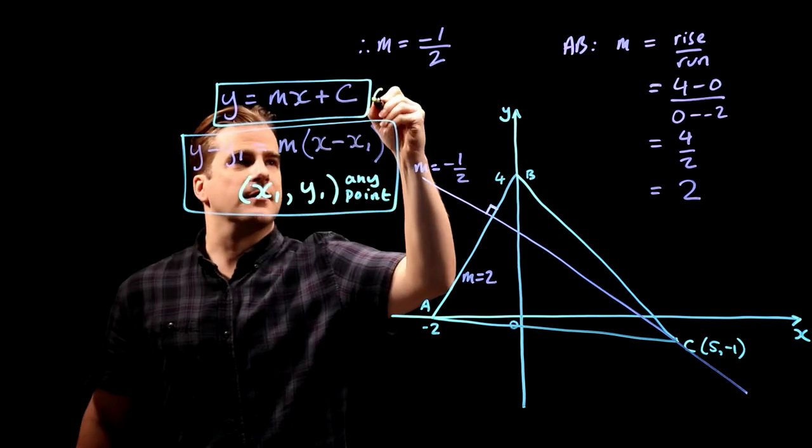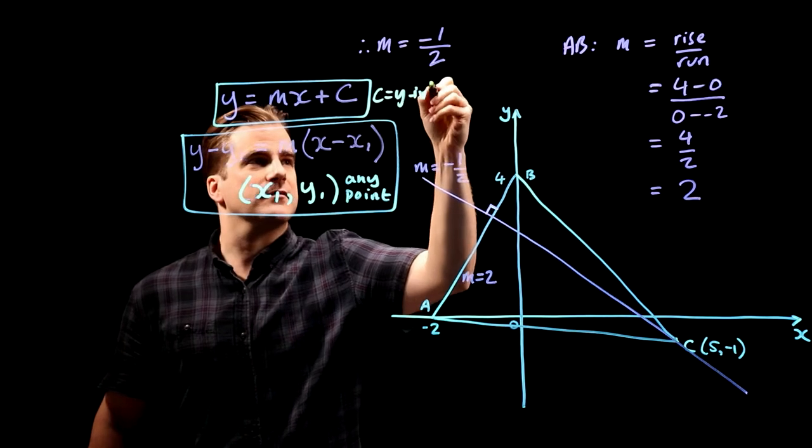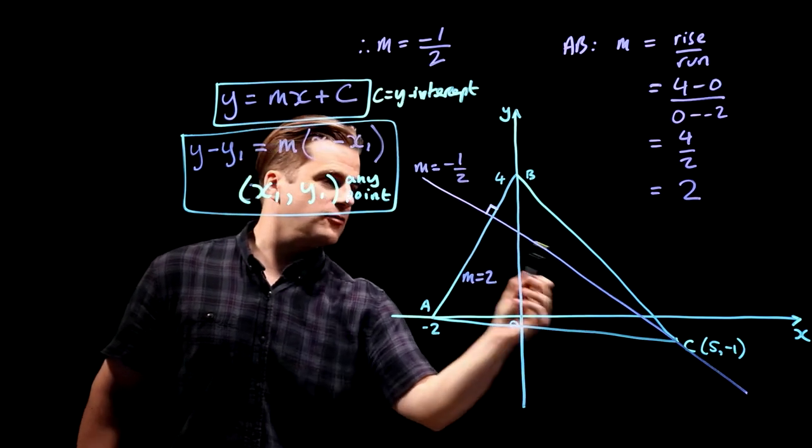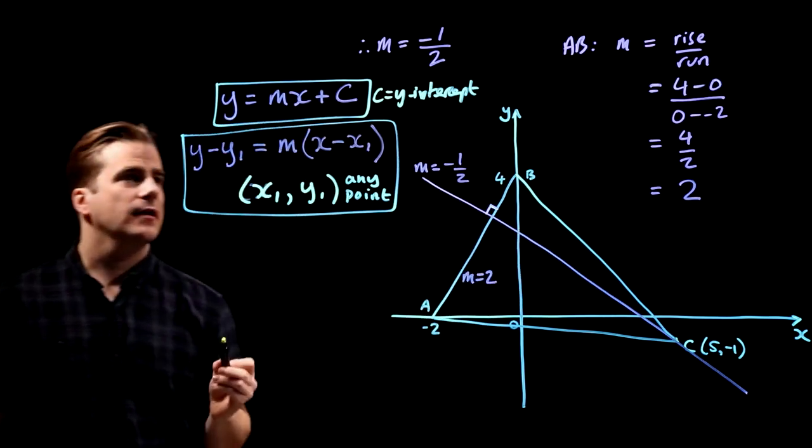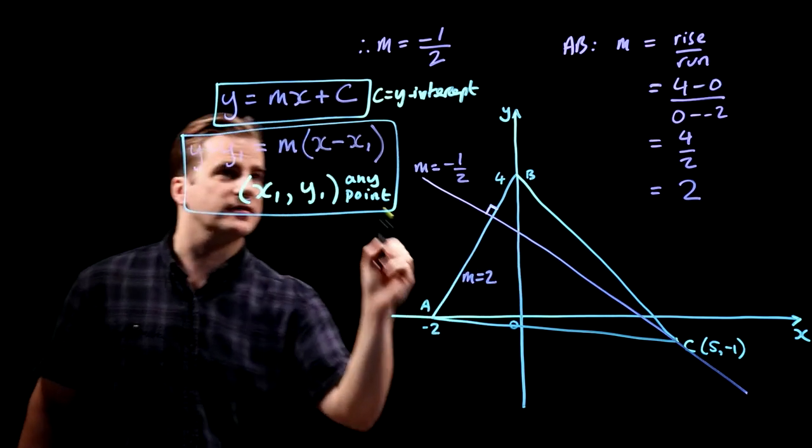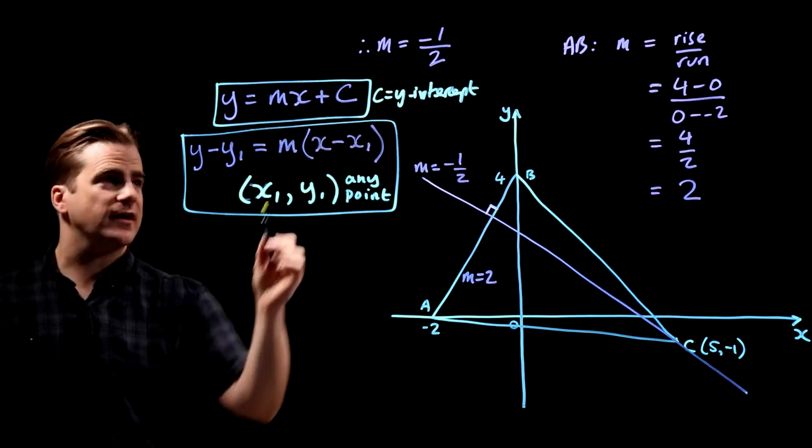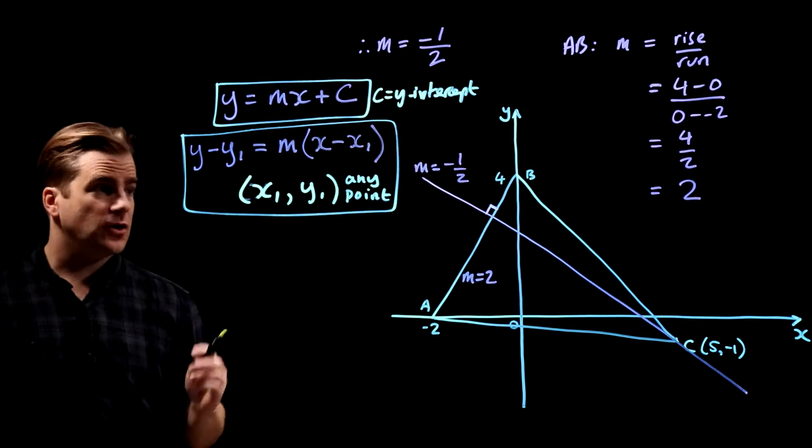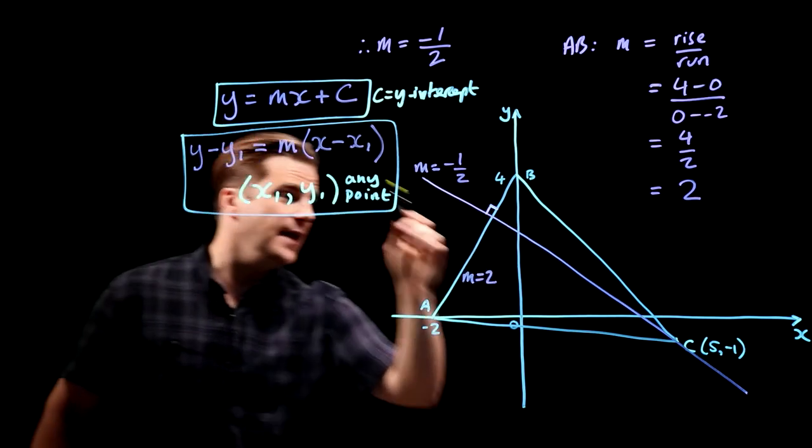C here, that's the y-intercept. C equals y-intercept. It's the point where the line crosses the y-intercept there. If we were to use this one, we'd have to work out that point there. So with this equation, you're restricted to finding the y-intercept. But if you know this equation, you're not restricted to that. You can pick any point on the line.